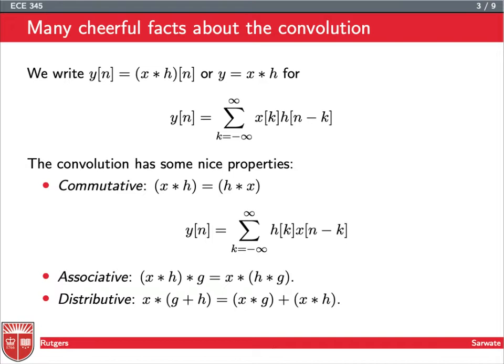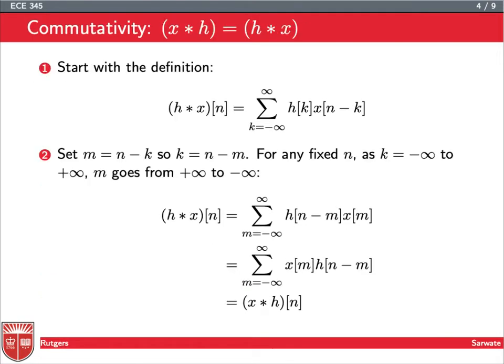If I take g plus h, two systems g and h, and I want to apply both g and h to x and add them up, then I can just add up the systems themselves and then convolve with x. So I can create a combo system, g plus h.